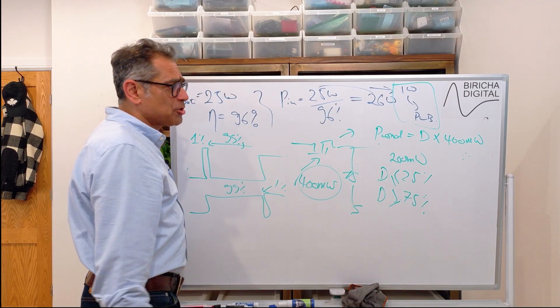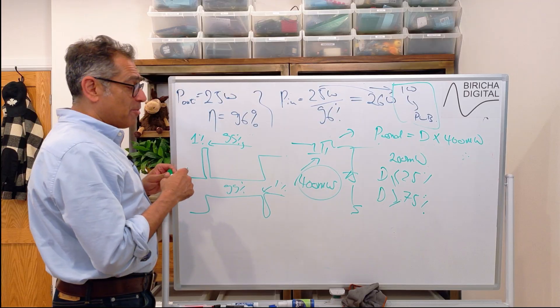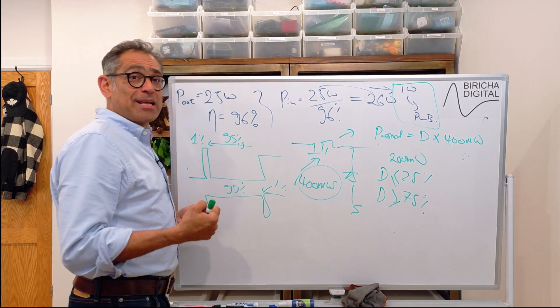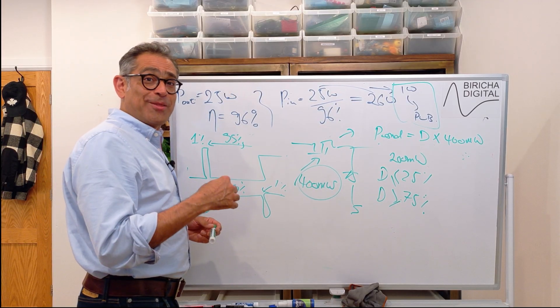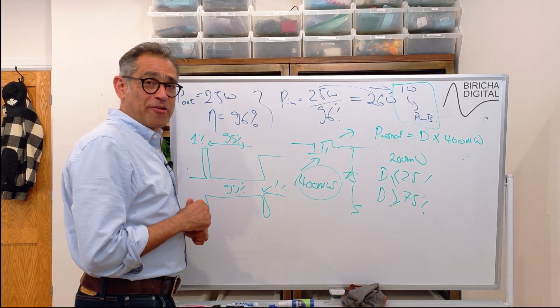So that's it, that's how I divide up my losses as to how much I'm allowed, and then after that I can go and work out my RDS and then select my MOSFET exactly how we showed in the other video. So I hope you enjoyed this video and I hope to see you at one of our workshops.